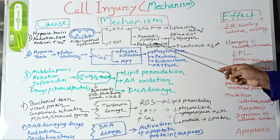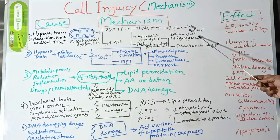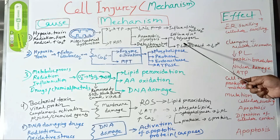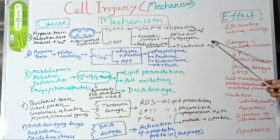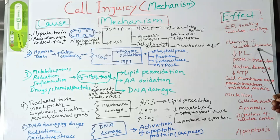Decreased ATP synthesis also activates the anaerobic glycolytic pathway. In this pathway, glycogen is utilized to produce energy, so glycogen stores are depleted and lactic acid is produced as a byproduct. This increased lactic acid causes decreased intracellular pH, which in turn causes clumping of nuclear chromatin.